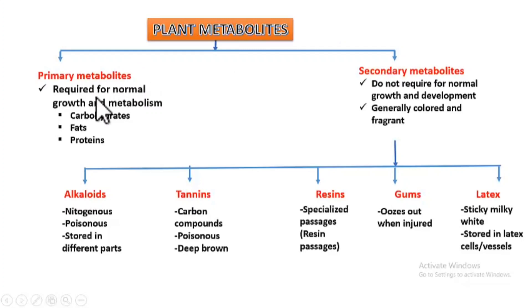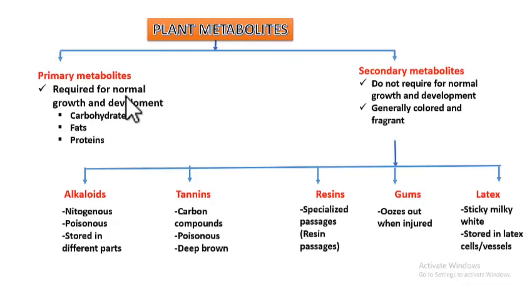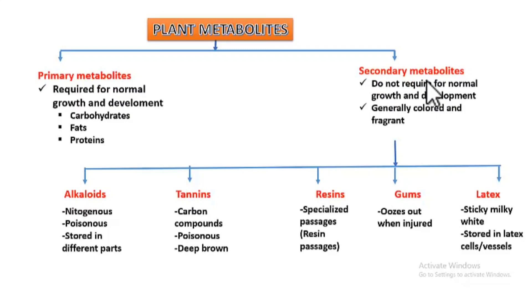Primary metabolites are those substances required for the normal growth and development of the plant — for example, carbohydrates, fats, and proteins. Secondary metabolites are substances produced during metabolic reactions that are not required for normal growth and development. These are the excretory substances in plants.